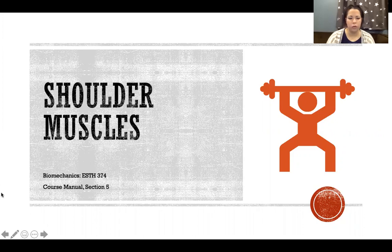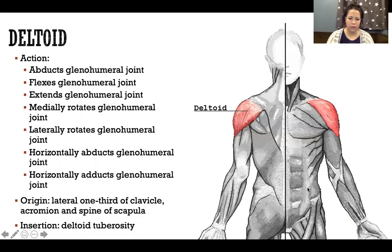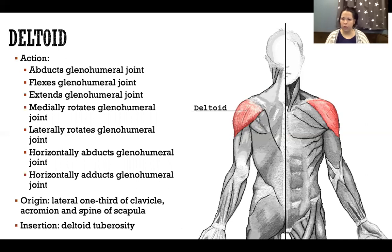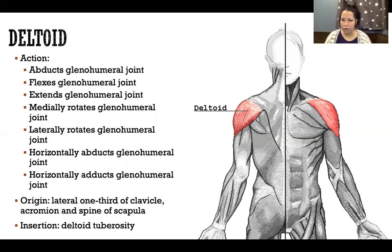Starting with deltoid, which has fibers that go in opposing directions. We can break deltoid down into three sections: the anterior deltoid, middle deltoid, and posterior deltoid. When thinking about the actions a muscle can perform, always look at the direction of the fibers, and look at the origin and the insertion. When the muscle contracts, the origin gets closer to the insertion, or the insertion gets closer to the origin, depending on the movement.